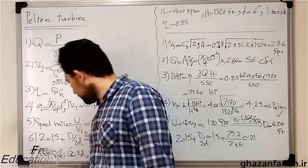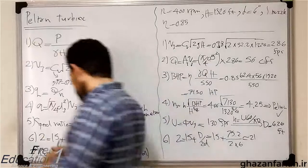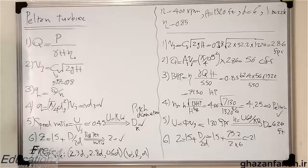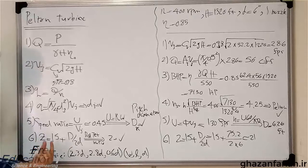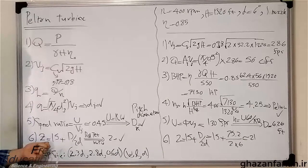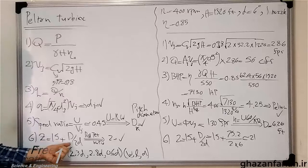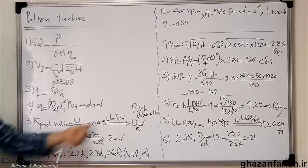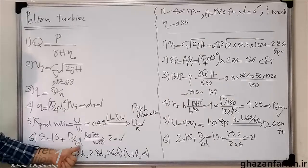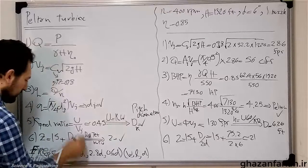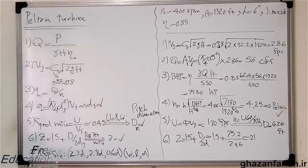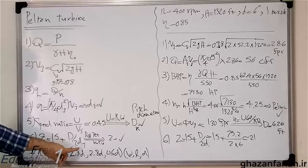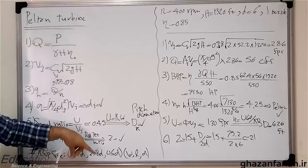And at the sixth step, you can compute the number of cups, z. Again, this is an engineering advice. Z is equal to 15 plus half of the ratio of the pitch diameter, D, and the jet diameter.